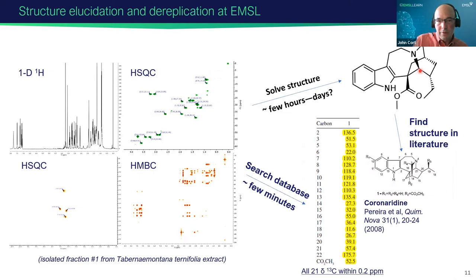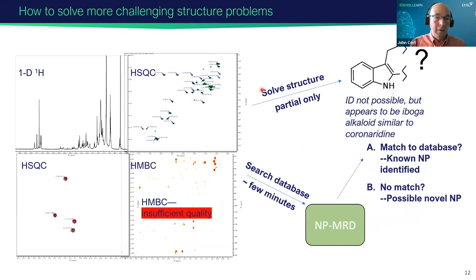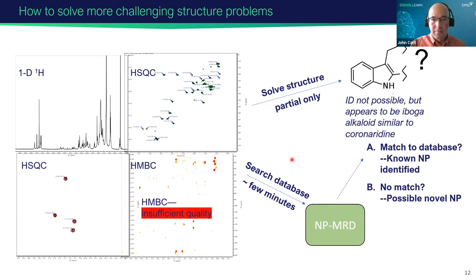There's one more compound from the same plant in a different fraction, but the data wasn't quite as good — probably the concentration was lower, and I couldn't solve the structure. I could get a partial structure and it looked like one of these iboga alkaloids. I could still measure all the carbon chemical shifts, and if there had been a database of all known natural product NMR data, that might have enabled me to identify the compound or conclude it was new.